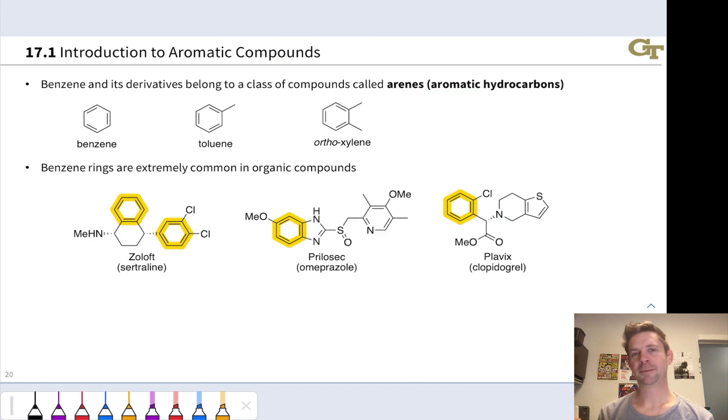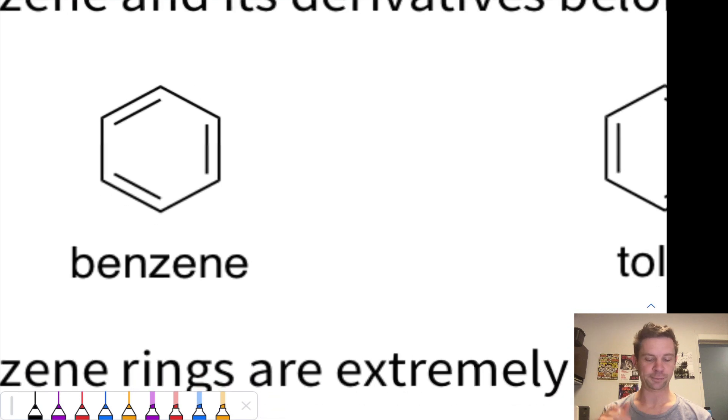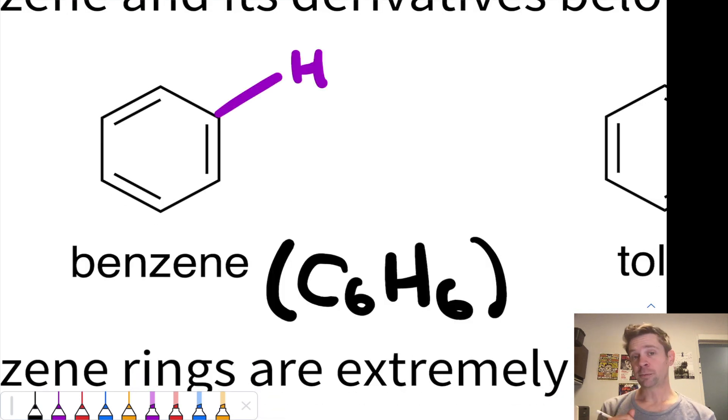The prototypical aromatic compound is benzene, C6H6, and you can see a structure for benzene right here. Each carbon in benzene has a hydrogen attached to it. Don't forget that there are six hydrogens in this structure, and so each carbon has sp2 hybridization, and this is worth verifying that the hybridization of each of those carbons is sp2.